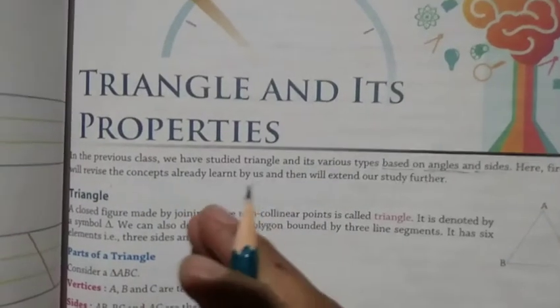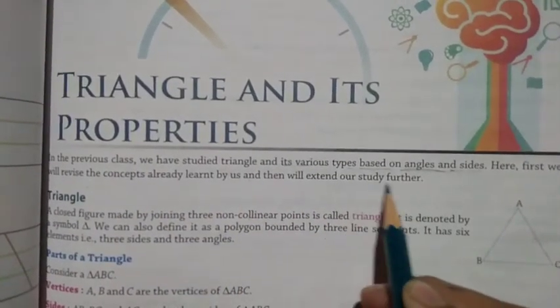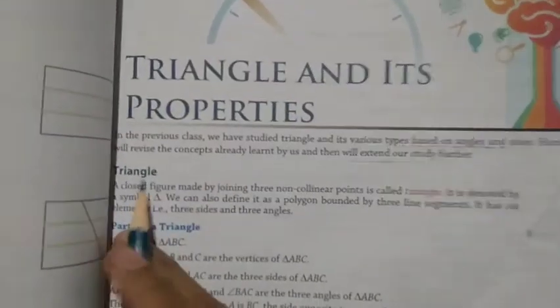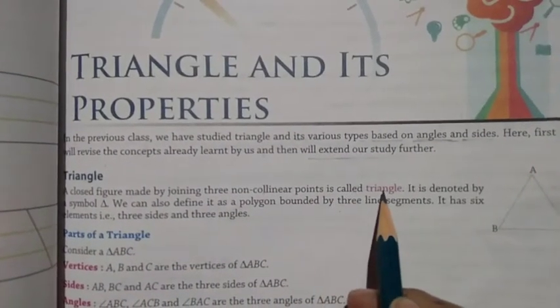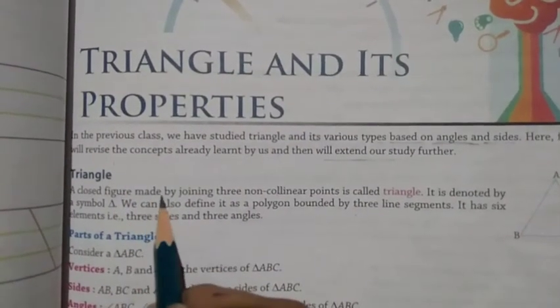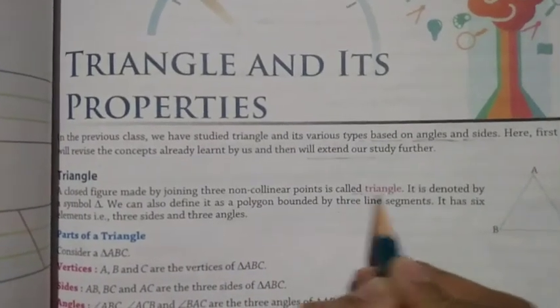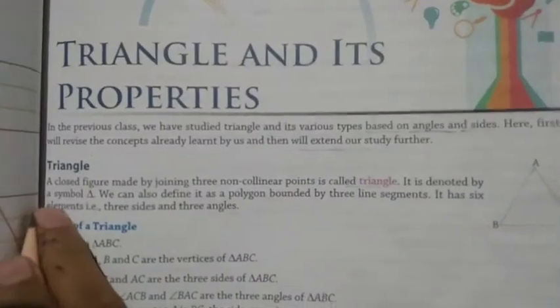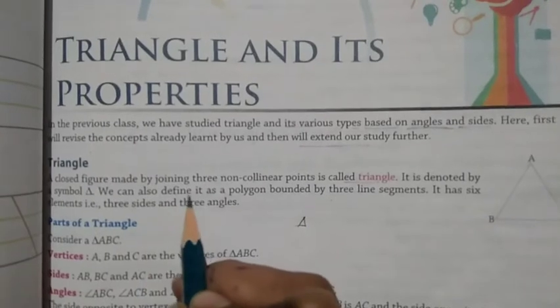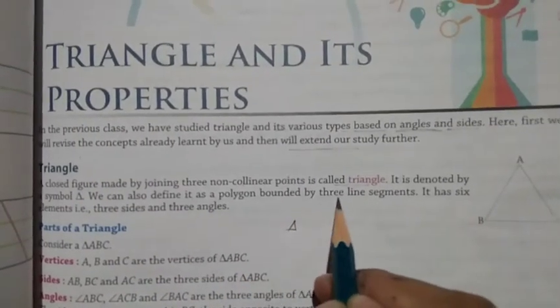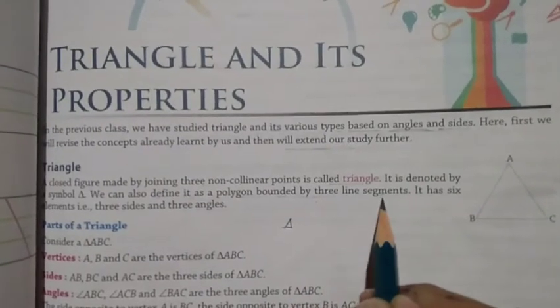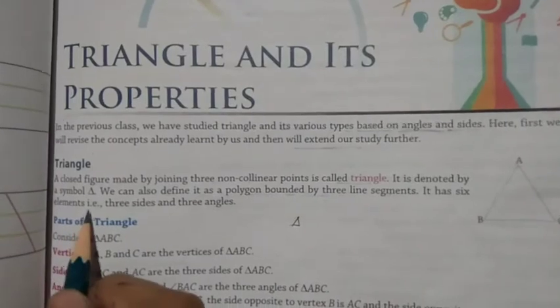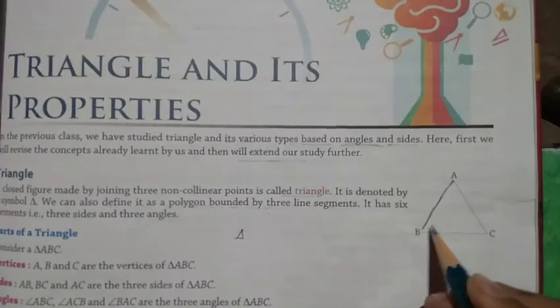We will revise the concepts already studied and then extend our study further. A triangle is a closed figure made by joining three non-collinear points. It is denoted by the triangle symbol. We can also define it as a polygon bounded by three line segments. It has six elements — three sides and three angles.